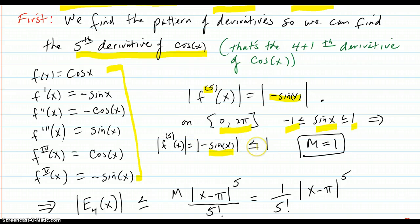So the fifth derivative being negative sine, the absolute value is trapped less than or equal to one. So that's our M value - the maximum value of the fifth derivative of f on the interval.